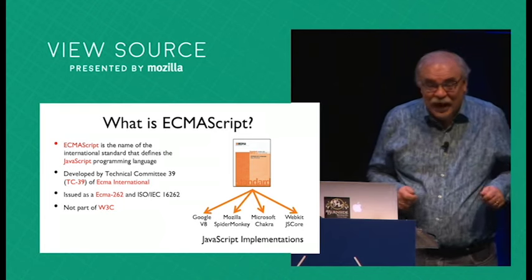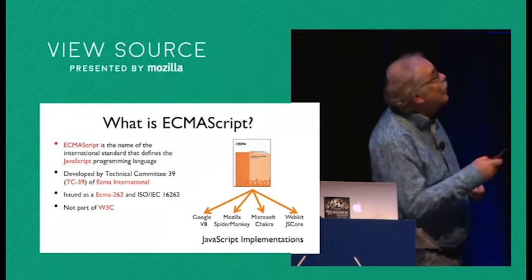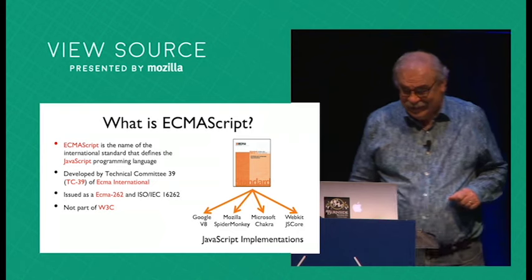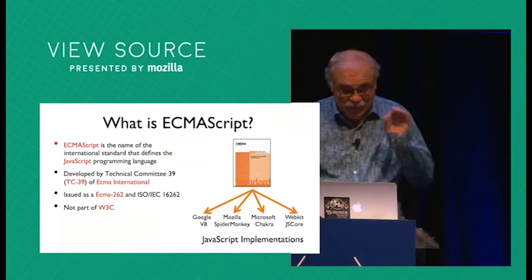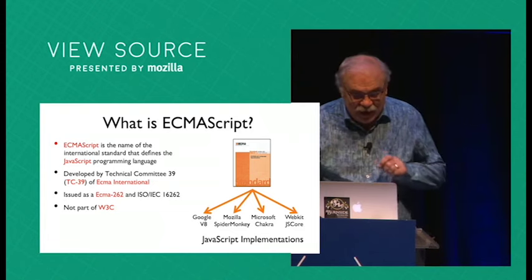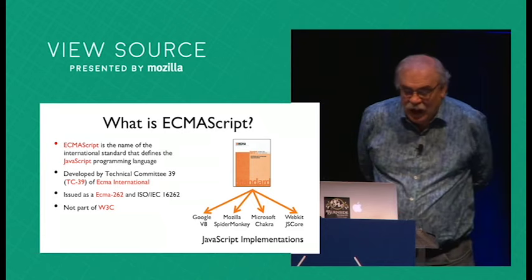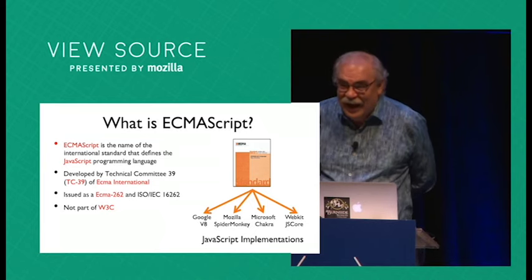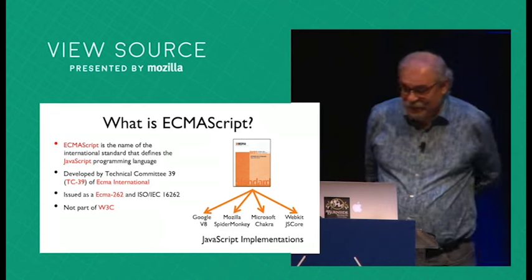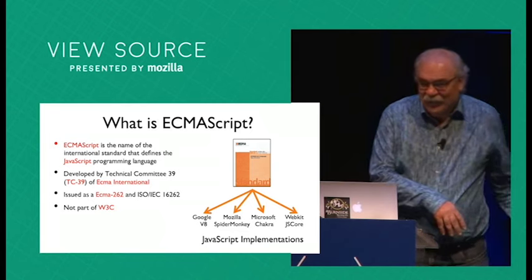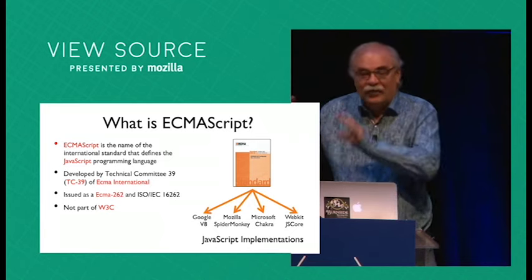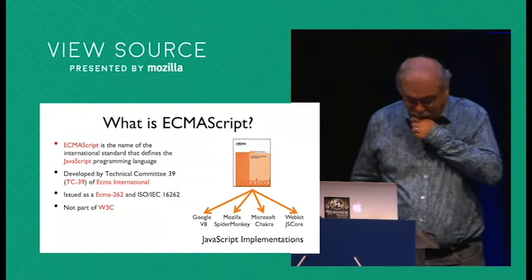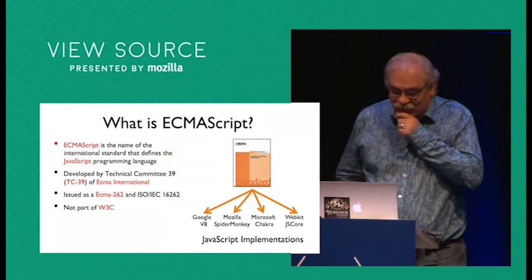The ECMAScript standard is created by an international standards organization called ECMA International — that's kind of where the ECMA in ECMAScript comes from. ECMA creates many different standards for many different technologies, and JavaScript is the domain of technical committee number 39, or TC39. The ECMA standard itself is officially known as ECMA-262. One thing that might surprise you is that ECMA International and TC39 are totally unrelated to the W3C, and the process of creating the ECMAScript standard is totally disjoint from the W3C.